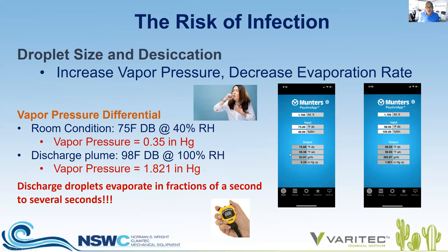Let's explore why this occurs. If you want to examine the states of air on your phone, I invite you to download for free Munters' psychrometric app — I use this every day. So why is the rate of desiccation of droplets expressed by an infected person important? Looking at the vapor pressure differential: in a room environment with a design set point of 75 degrees at 40% RH, the vapor pressure is 0.35 inches of mercury. A discharge plume from an infected person will be at least 98 degrees at 100% RH, giving a vapor pressure of 1.821 — an extreme differential.